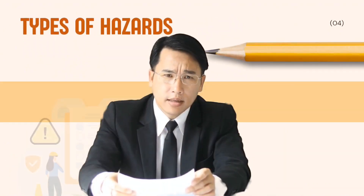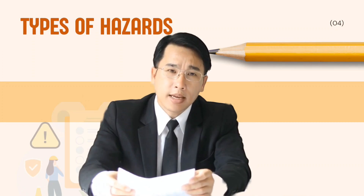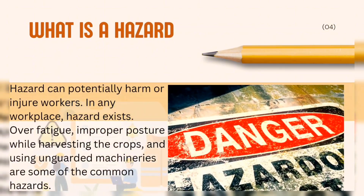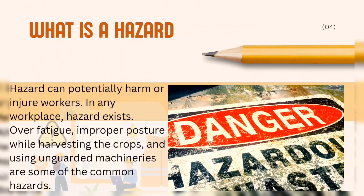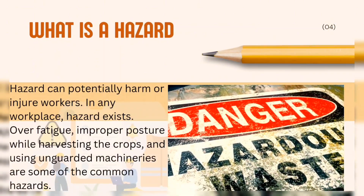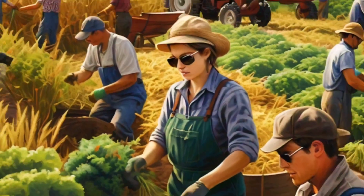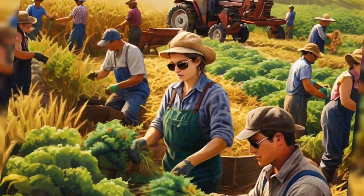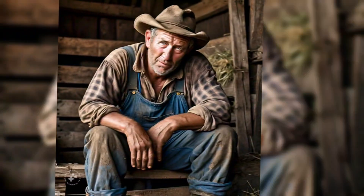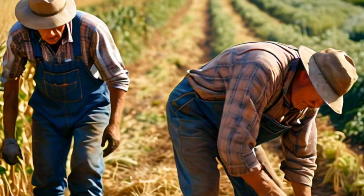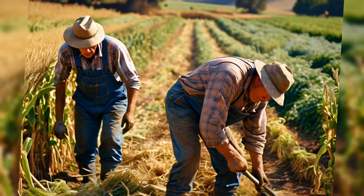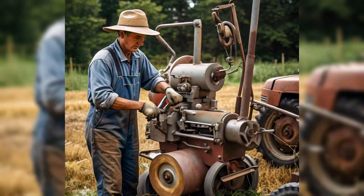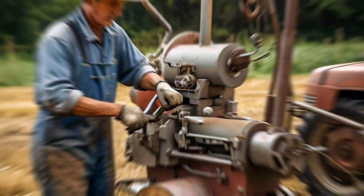Now let us talk about the types of hazards. But first, what is a hazard? A hazard can potentially harm or injure workers. In any workplace, hazard exists. Over fatigue, improper posture while harvesting the crops, and using unguarded machineries are some of the common hazards.